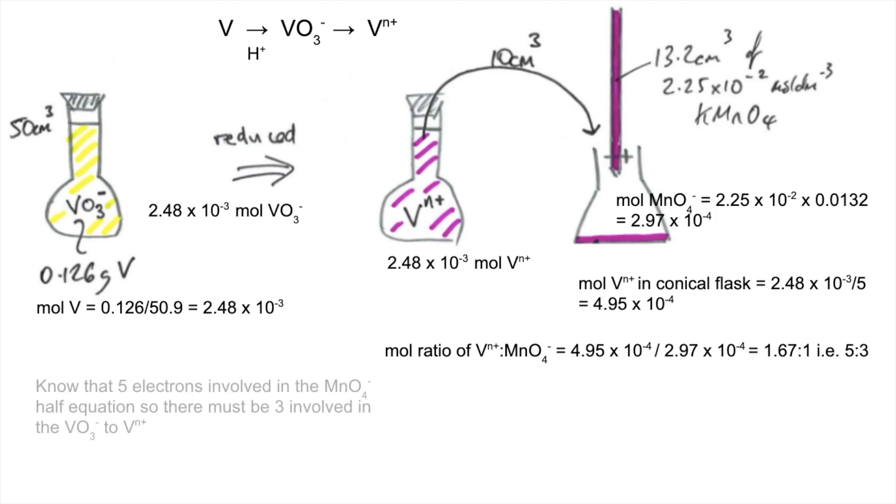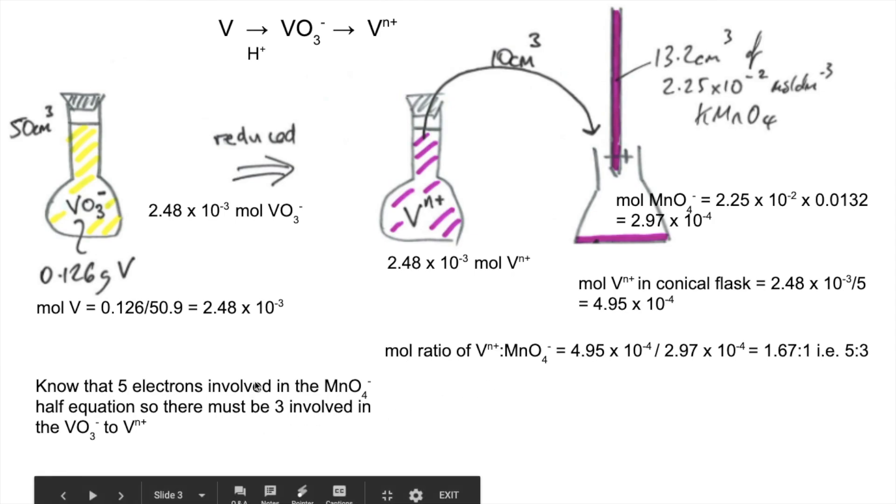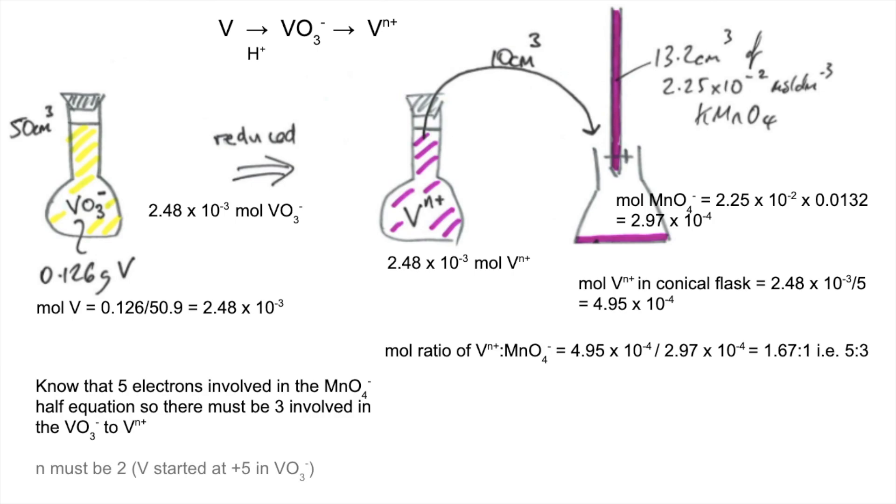So because of that, we know from the equation they supplied that there are 5 electrons involved in the MnO4 minus half equation. So there's going to be 3 involved in the VO3 minus to Vn plus. So n's got to be 2 because V started at plus 5 in VO3 minus.